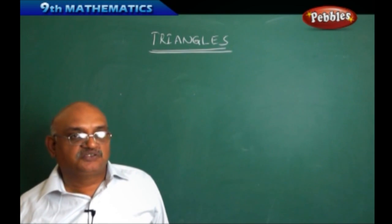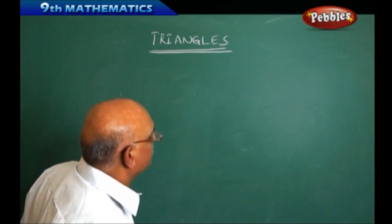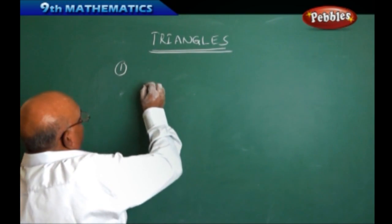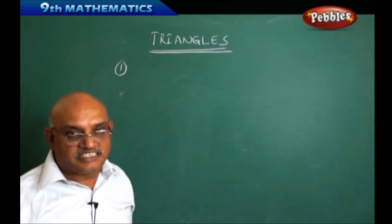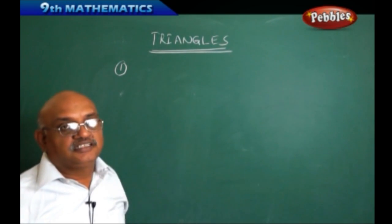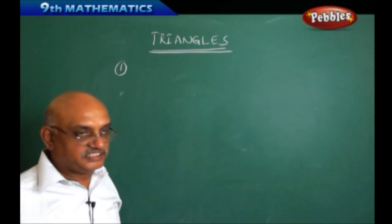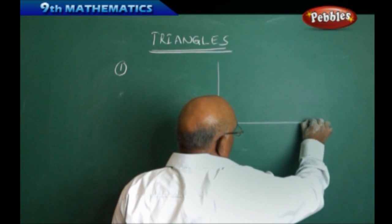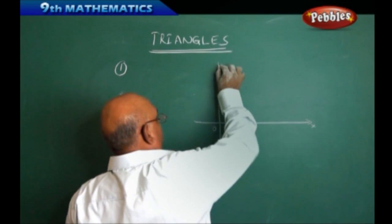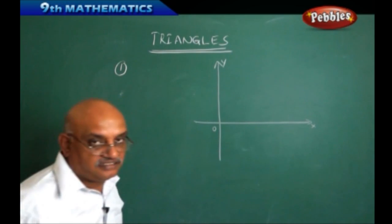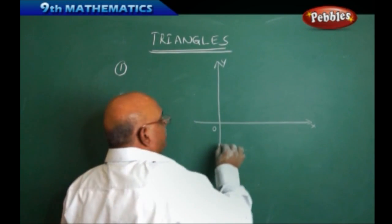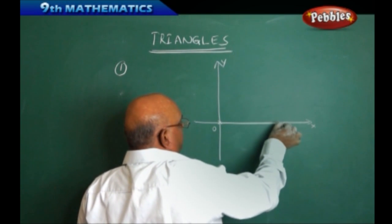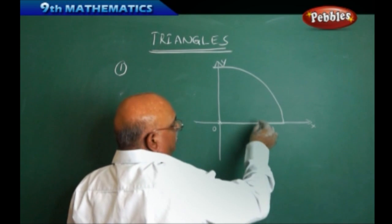The first point we have to understand is a triangle. Generally, we have three types of triangles. A triangle has three sides and three angles. The triangle can be constructed in this way: suppose if I take a coordinate system — this is the x-axis and y-axis — then if any line based on this initial line is moving around a particular point, we are going to get a circular path.